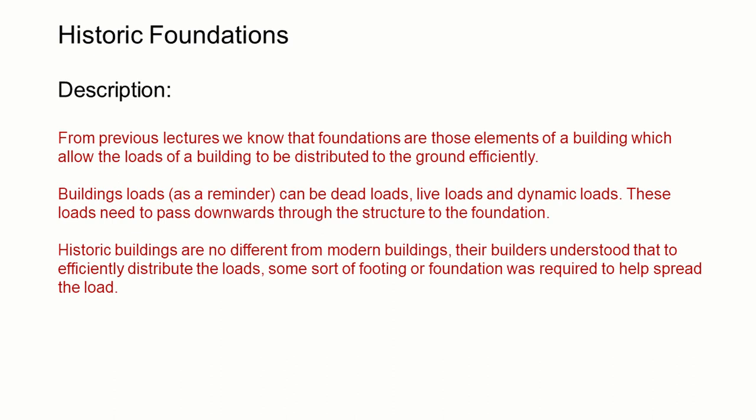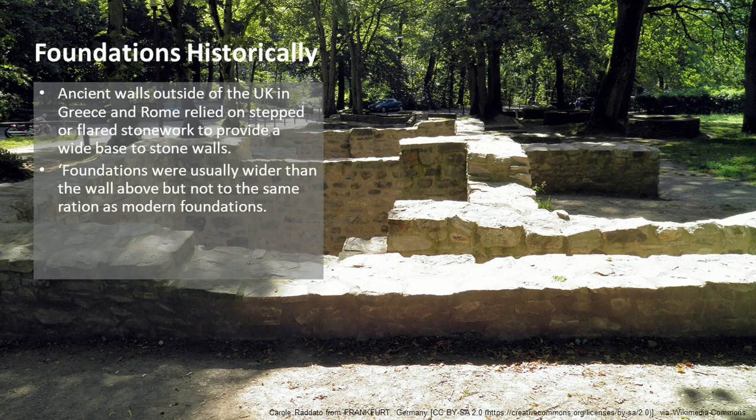Historic buildings are no different from modern buildings. The builders of the past understood through experimentation, and presumably a fair amount of failure, that something was required at the base of a wall to help spread the loads of the building. Foundations in classical times were often simply widened bases to the wall placed below the ground, either stepping out or flaring out. Foundations were normally wider than the wall above, but not to the same proportions as a modern foundation would be.